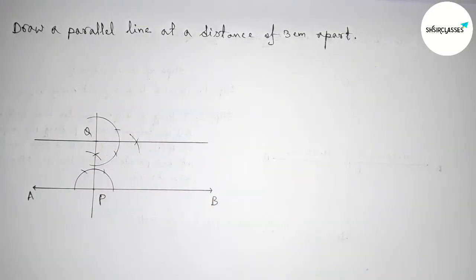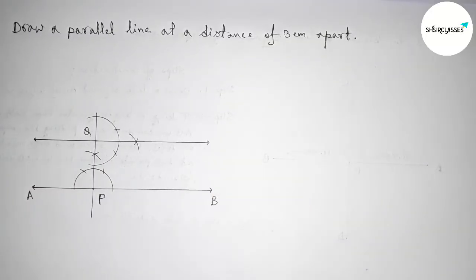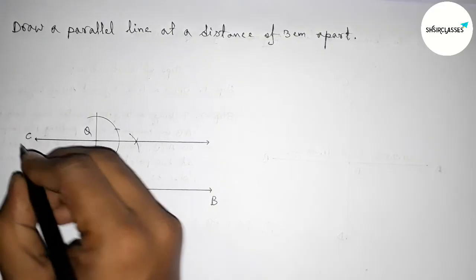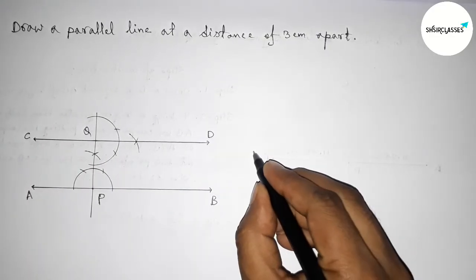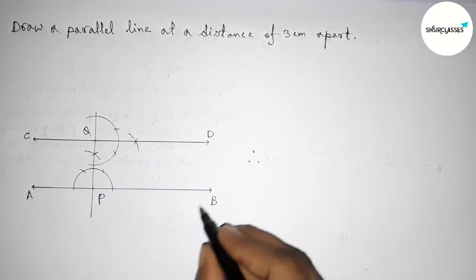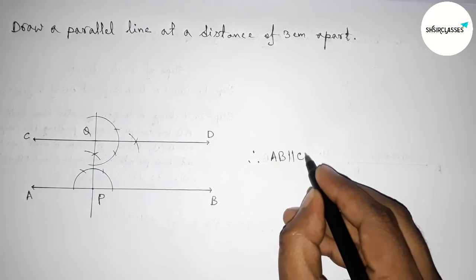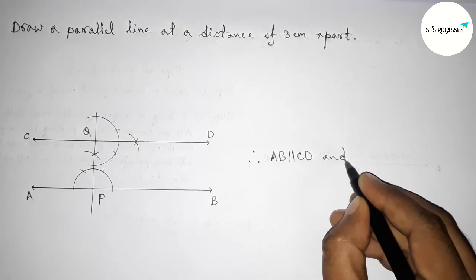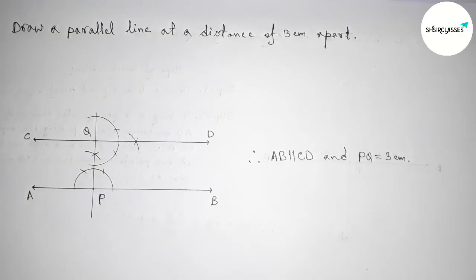Joining this line segment, and taking arrow marks on both sides. Label this line C and D. From the picture, we can say that AB and CD are parallel lines — AB parallel to CD — and the length PQ equals 3 centimeters. That's all, thanks for watching. If this video is helpful to you, please share it.